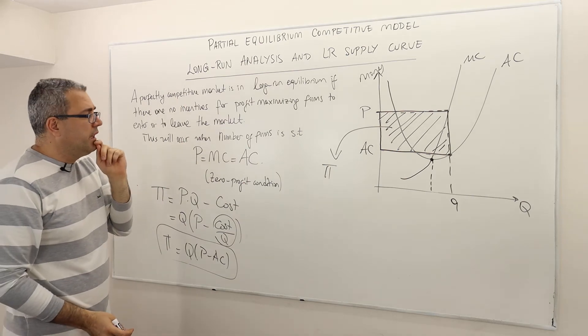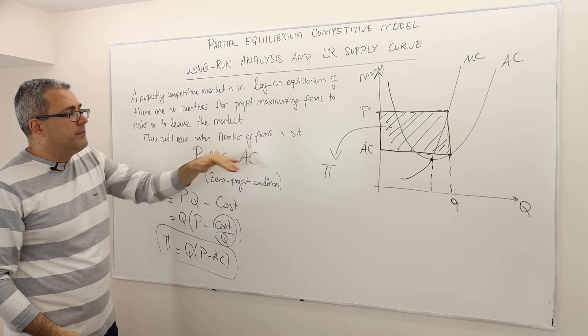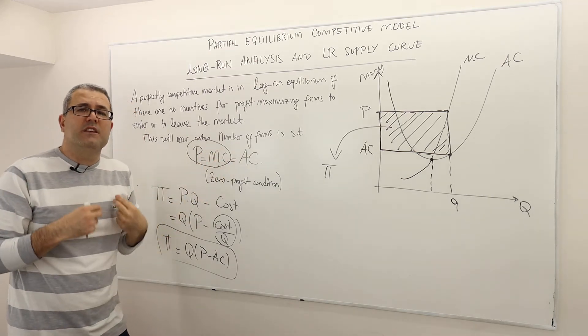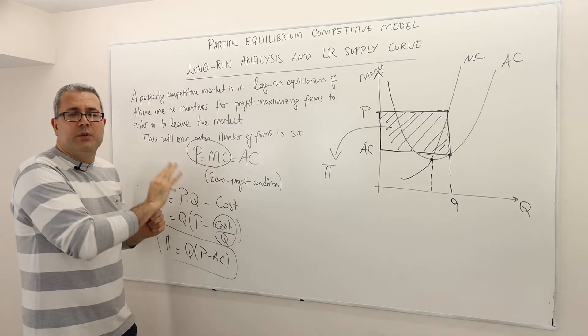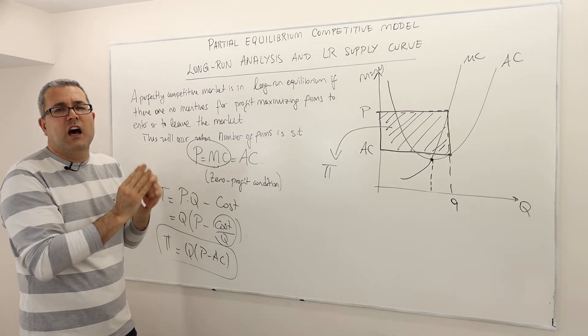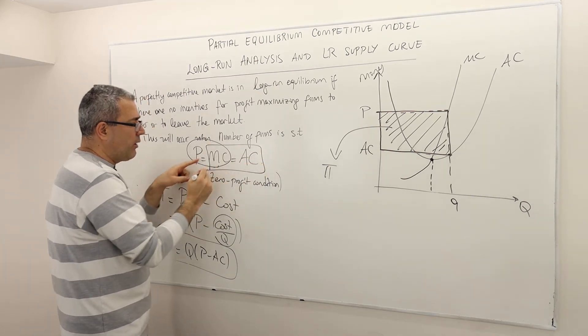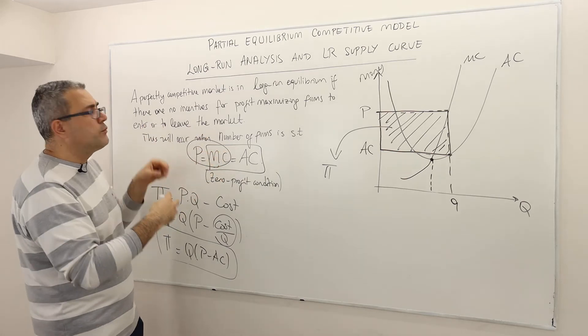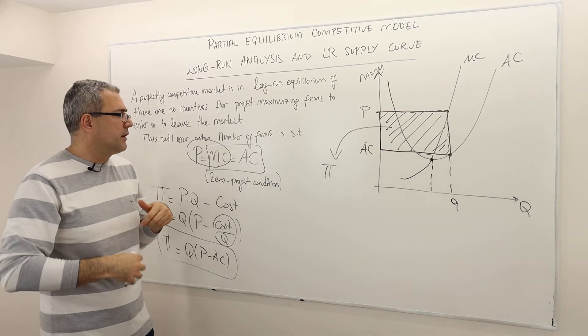So the question is why P has to be equal to MC, which is equal to AC? First of all, this comes from the fact that this is a firm operating in a perfectly competitive market. So P is going to be equal to MC. This is how much this firm will always produce. This part, however, comes from the fact that in the long run, firms should have no incentive to enter or exit this market.